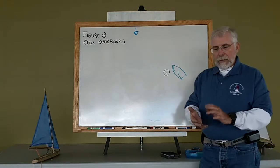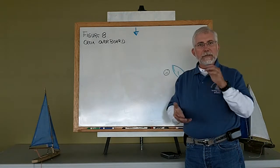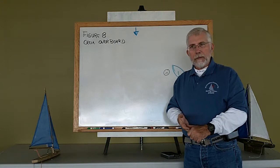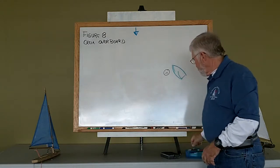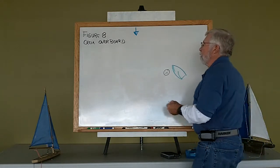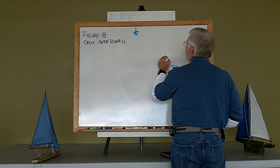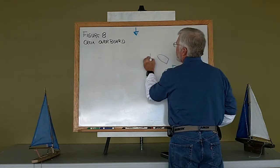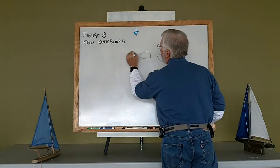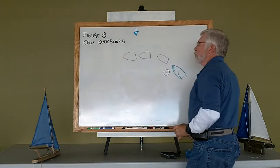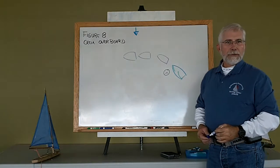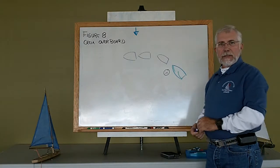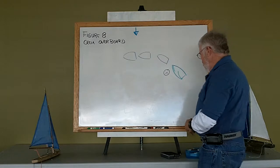So, crew overboard, litter the water with floating devices, and appoint a spotter. Now, as the skipper, the next thing you're going to do, because you continue to sail in this process, is turn the boat to a beam reach. In this case that means falling off to a beam reach.